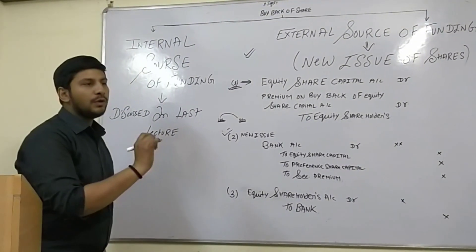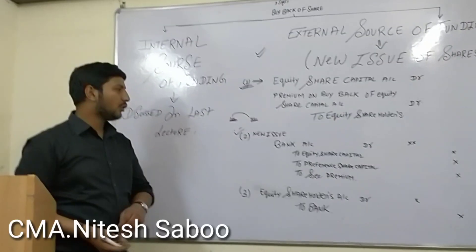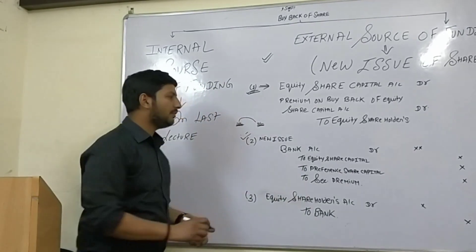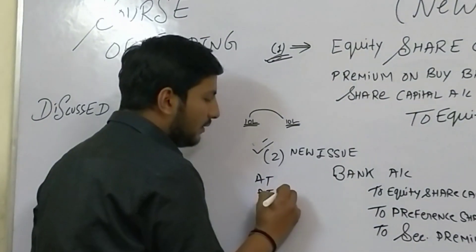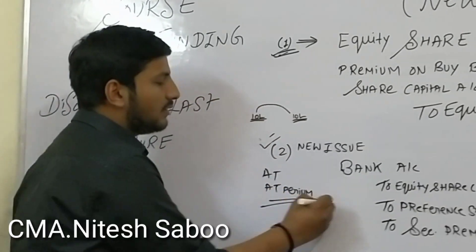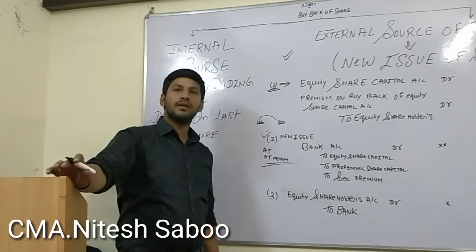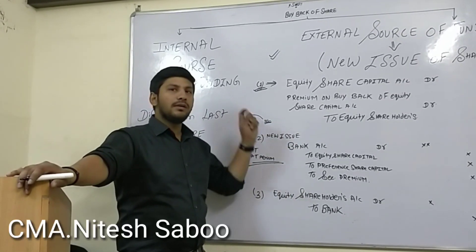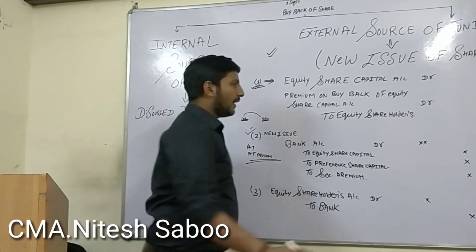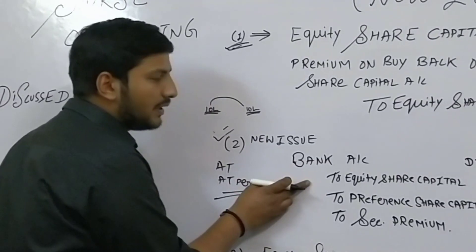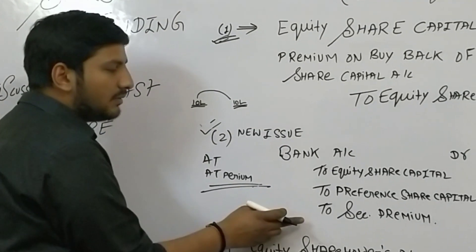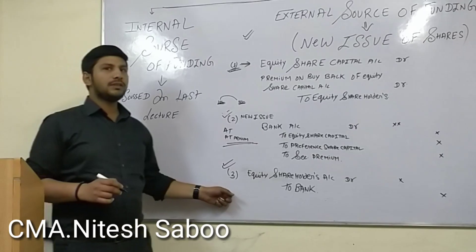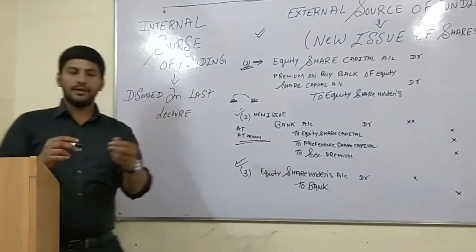As we are aware, the new issue can be of equity shares, new issue can be of preference shares, and the new issue can be at par or at a premium. We cannot issue new shares at a discount in this situation. The capital requirement will be fulfilled by the issue of equity shares and preference shares and securities premium. The last entry will be payment to the equity shareholder: Equity Shareholder Account debit to Bank.